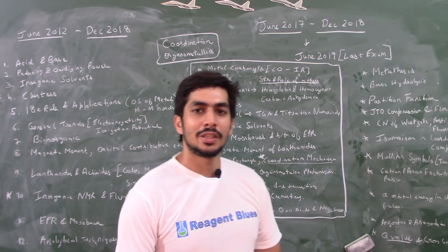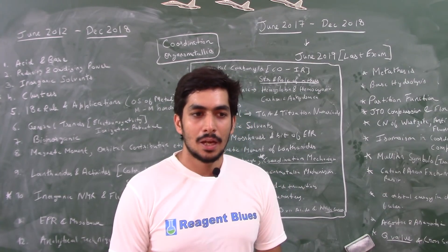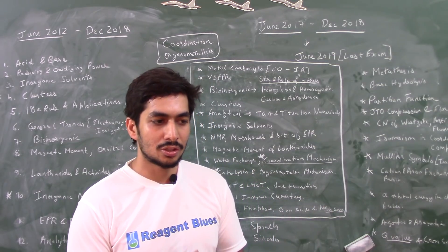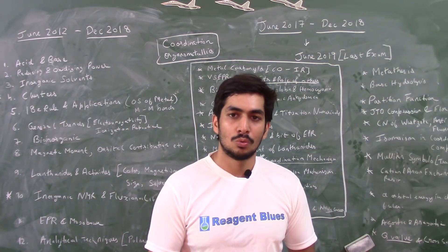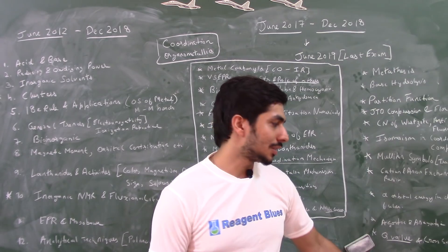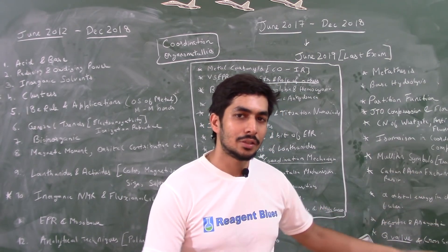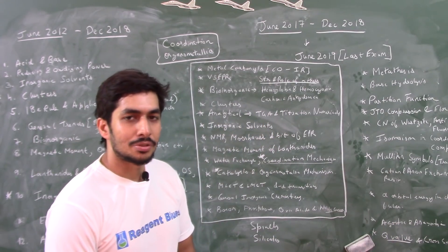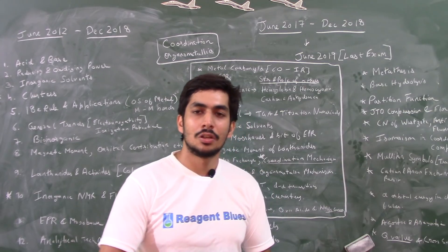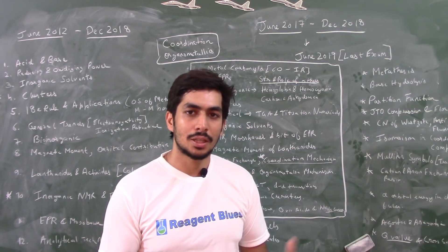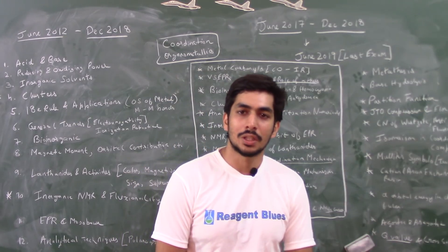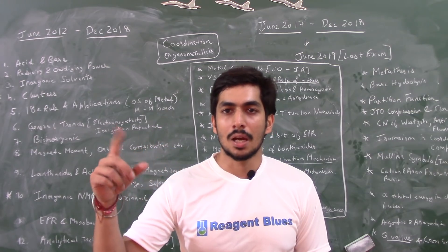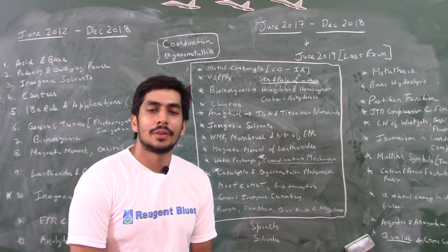From nuclear chemistry, every year there is a question from a different kind of topic with no clear trend. If you have the time — and this is only for students who have already done everything — you can go for Q-value and cross-section. These are the most common nuclear chemistry questions: the Q-value (energy released or absorbed in a nuclear reaction) and cross-section of the nucleus measured in units of barn (b).